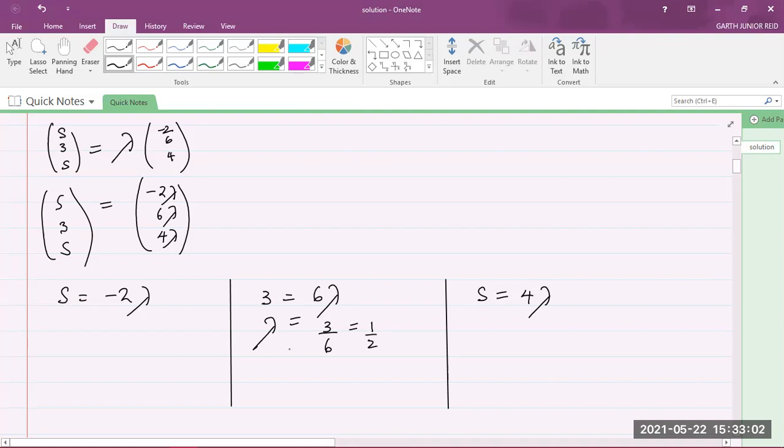So now I know the value of lambda. Let us now find the values for S. So S is equal to negative 2 times lambda, that's 1 over 2. If I should multiply, we recognize that the 2s here will cancel, so I will get negative 1 as my answer for S. Over here, I can say S is equal to 4 times 1 over 2, so S is equal to 2.